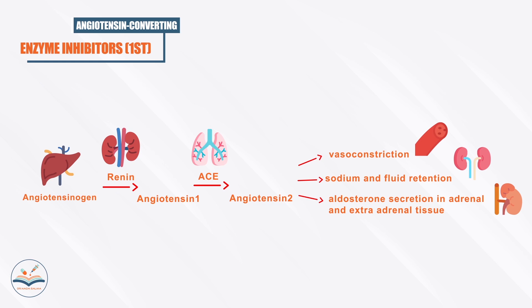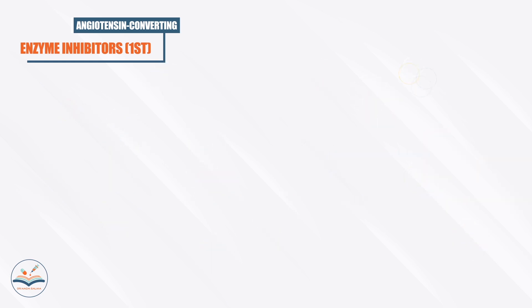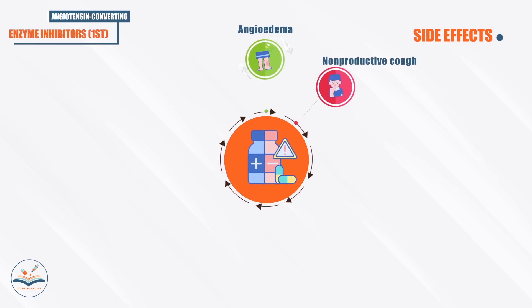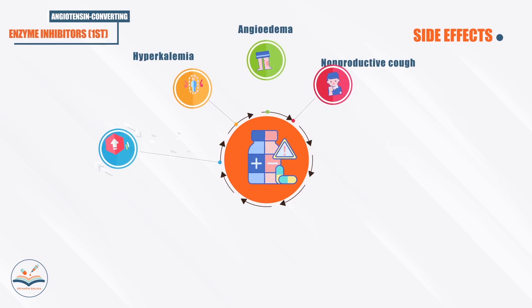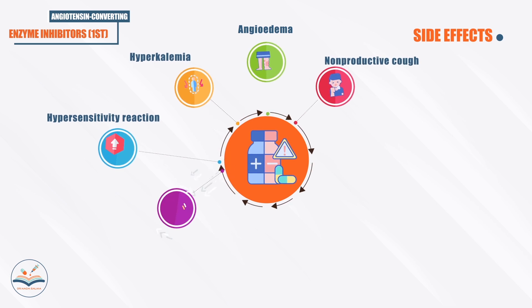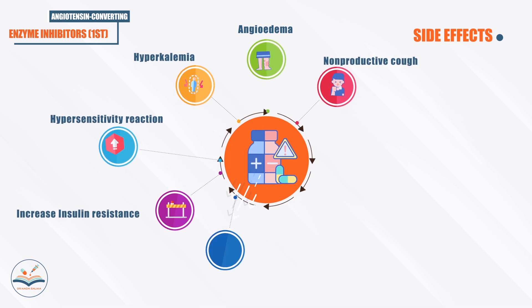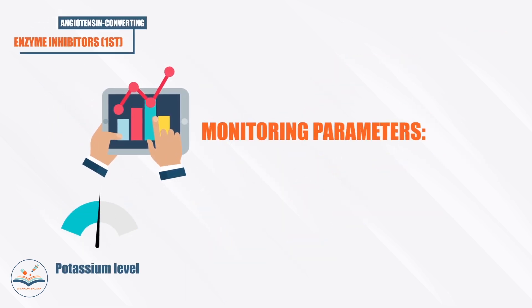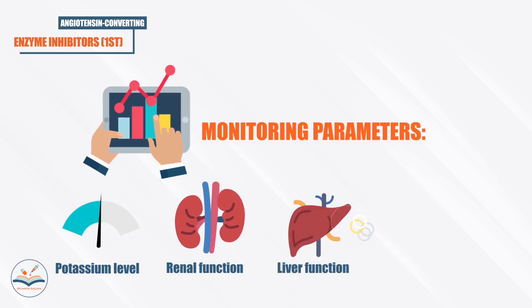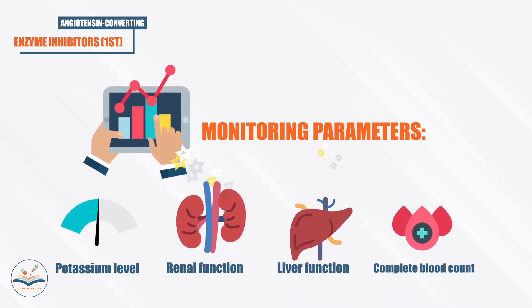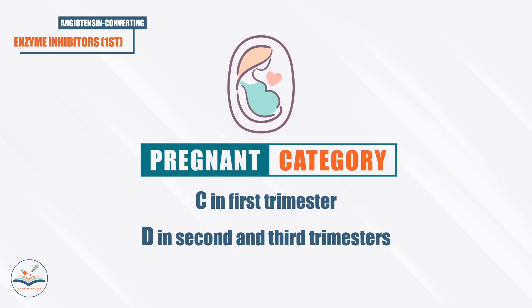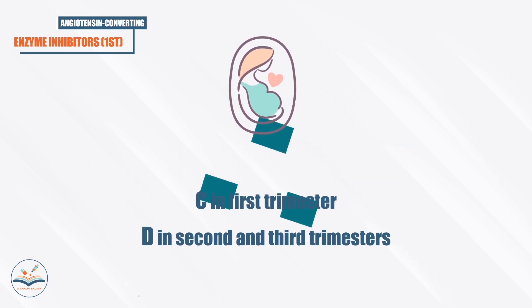Side effects of ACE inhibitors include non-productive cough, angioedema, hyperkalemia, hypersensitivity reaction, increased renal resistance, acute kidney failure, hypotension, and anemia. We have to monitor potassium level, renal function, liver function, and complete blood count. ACE inhibitors are category C in the first trimester of pregnancy and category D in the second and third trimesters.